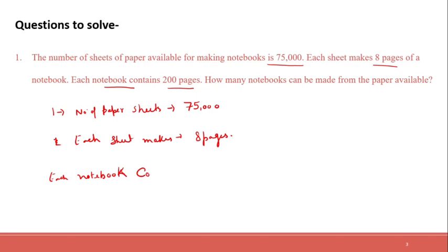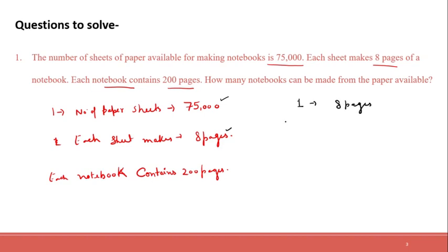Each notebook contains 200 pages. So first, let's find how many pages we will have. 1 sheet equals 8 pages, so 75,000 sheets will make 75,000 into 8 pages. Just multiply 75,000 with 8.